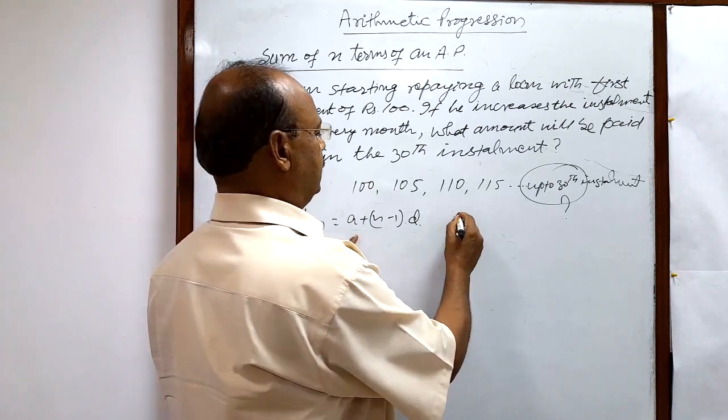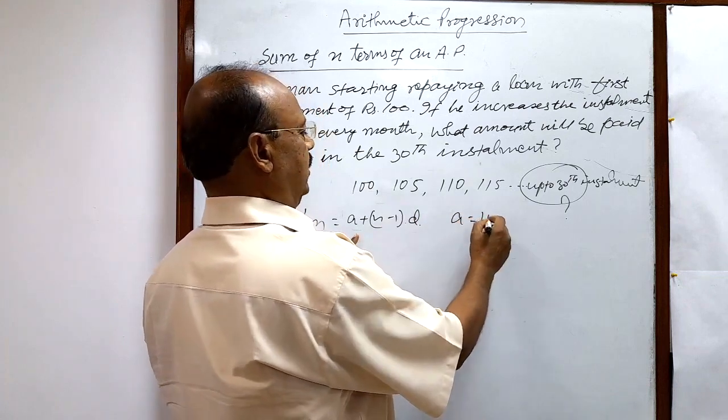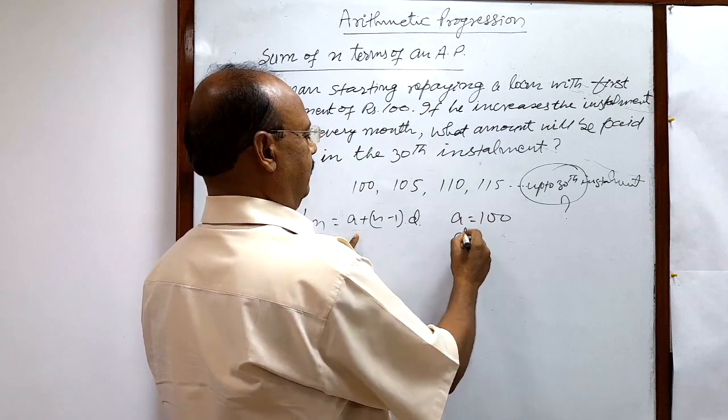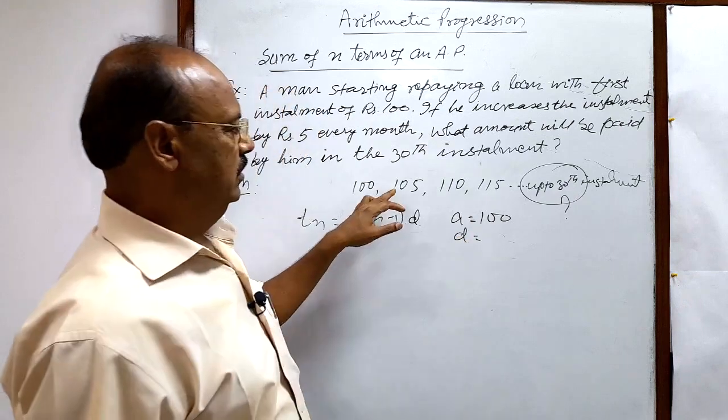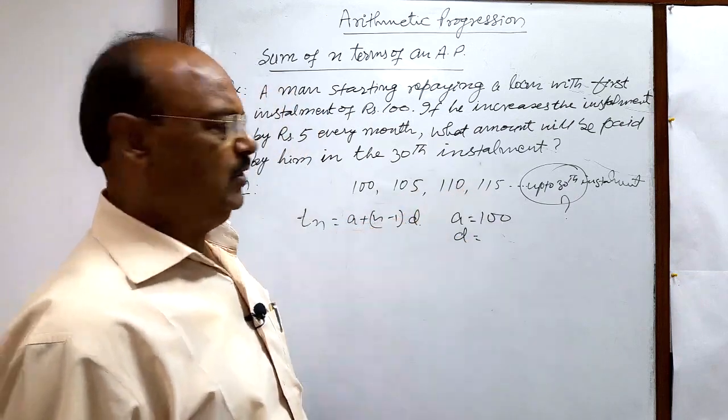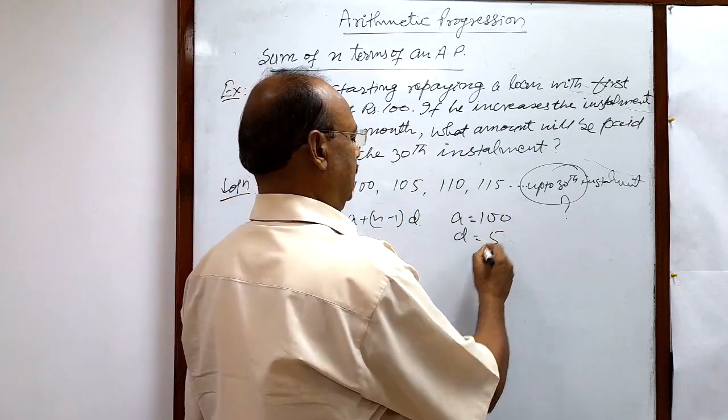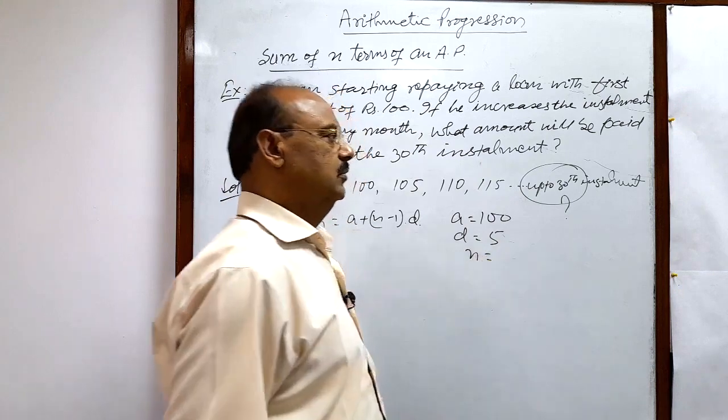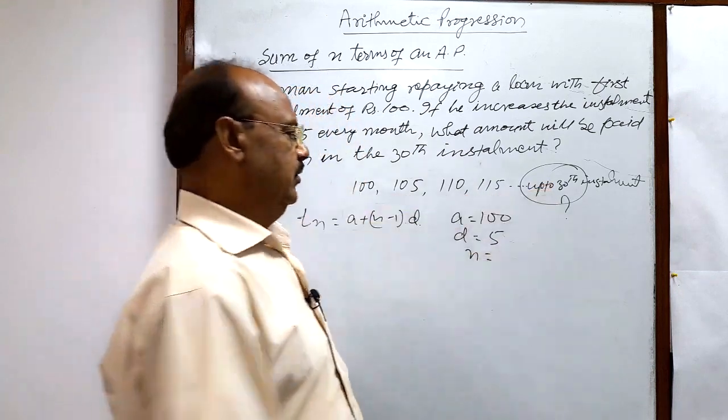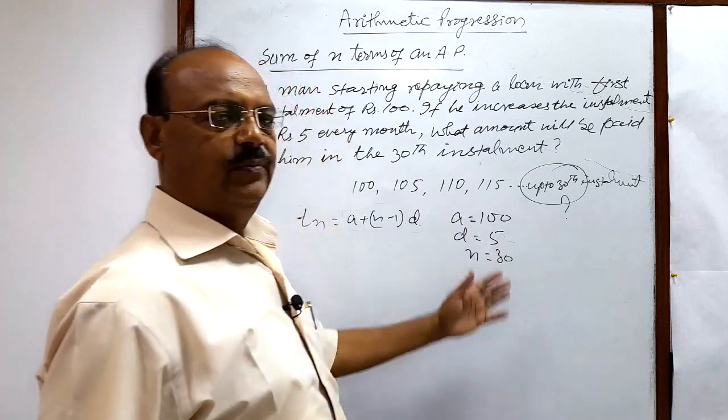But here you see, what is the first term a? a is 100. Common difference d is how much? There is an increment of 5 rupees every month, so d is 5. And n is how much? 30th installment, so n is 30. Very simple.